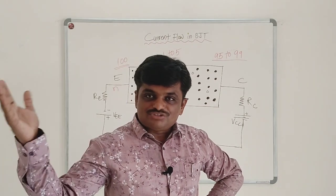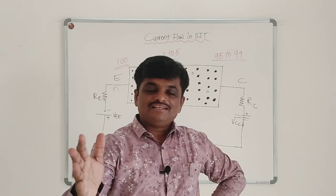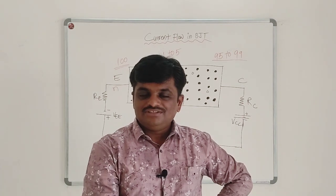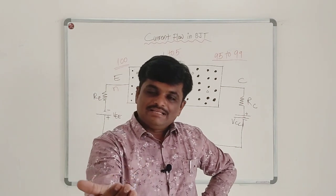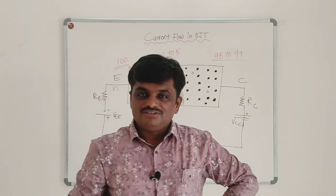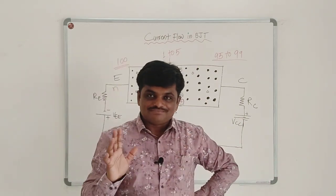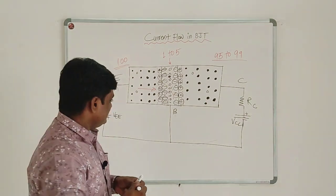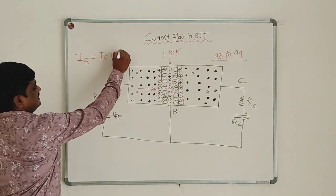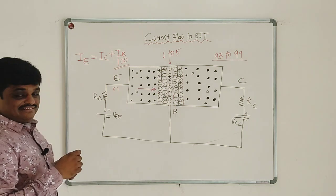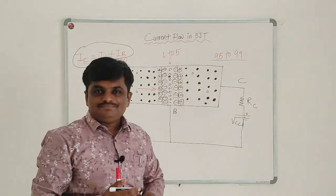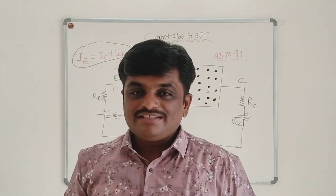If there are 100 electrons moving from the emitter to the base region, they will form the emitter current. Out of these 100 electrons, if 2 electrons recombine with holes in the base region, they will form the base current, and the remaining current will be the collector current, formed due to electrons crossing the base-collector junction. The ultimate conclusion is that the emitter current is always equal to the collector current plus the base current in any transistor, whether NPN or PNP.